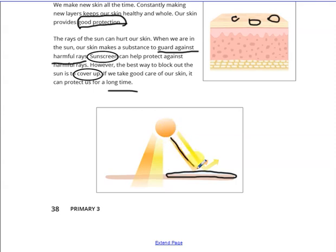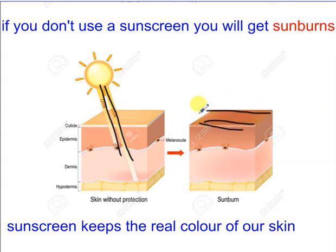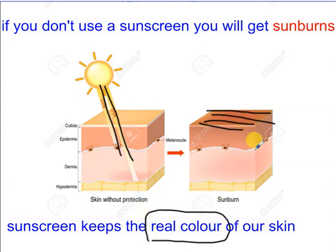If we take good care of our skin, it can protect us for a long time. If I put sunscreen on my skin, the sun rays reflect and don't enter my body, which would cause harm. If I don't use sunscreen, I will get sunburn on my skin. Sunscreen keeps the real color of our skin — if I don't put on sunscreen, my skin color can become dark or black.